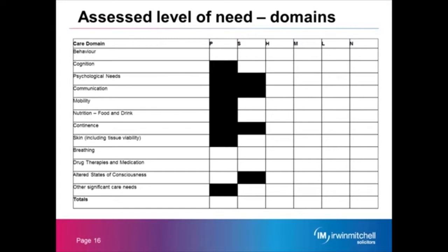P is priority, S is severe, H is high, M is moderate, L is low and N stands for no need. The areas marked in black are where the framework doesn't accept that an assessment of a particular level of a particular need applies — this is so that the bar is not set too high. For example, when it comes to communication, the highest level that the person would need to reach is high, and that is described within the framework as someone being unable to reliably communicate their needs at any time, in any way, even when all practical steps to assist them have been taken. The person has to have most of their needs anticipated because of their inability to communicate them — so that's quite a severe communication difficulty. It only has to go as far as that to be at the top level of need in that area.